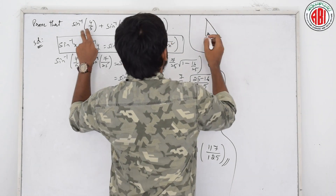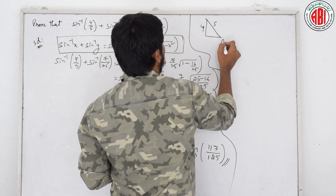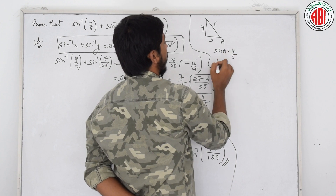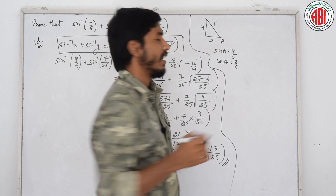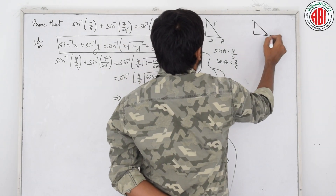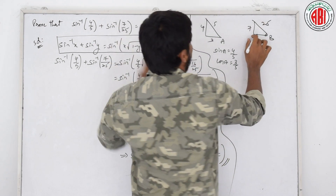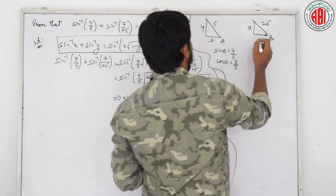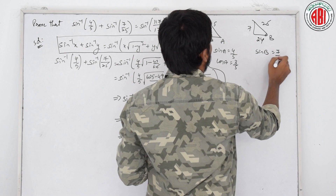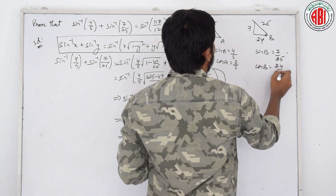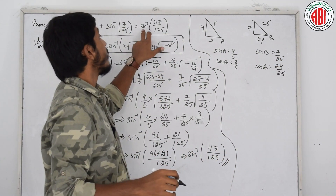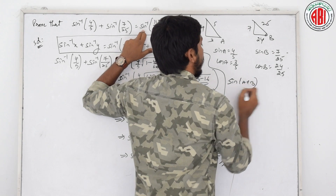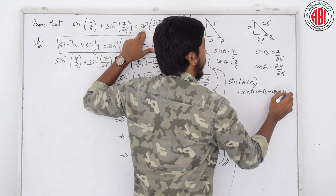Let us assume sin inverse 4 by 5 as angle a. Opposite is 4, hypotenuse is 5, so adjacent is root of 25 minus 16, which is 3. So sin a is 4 by 5 and cos a is 3 by 5. For angle b, sin inverse 7 by 25: opposite is 7, hypotenuse is 25, adjacent is root of 625 minus 49, which is root of 576, that is 24. So sin b is 7 by 25 and cos b is 24 by 25.